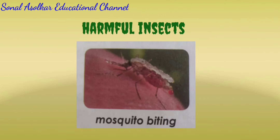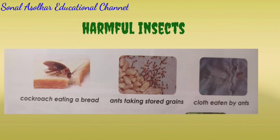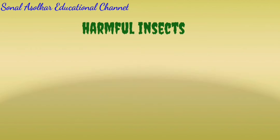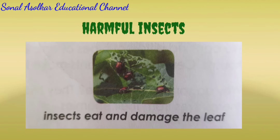Some insects like flies, mosquitoes and bed bugs are harmful to us. They carry germs. When they bite us, these germs enter our body and make us sick. Insects like cockroaches and ants eat the stored food items. They can also damage our clothes. Some insects are harmful to the plants we grow. They eat up their leaves and fruits.